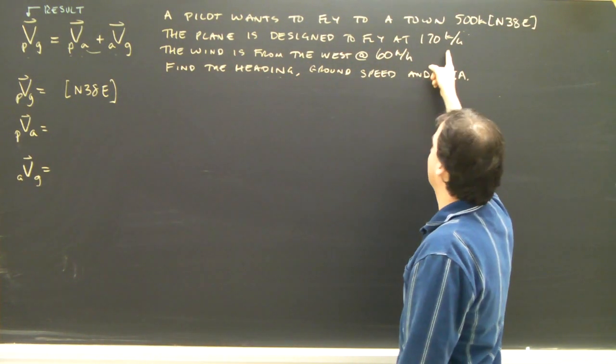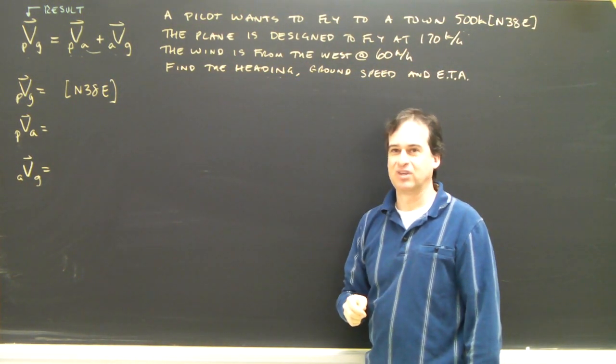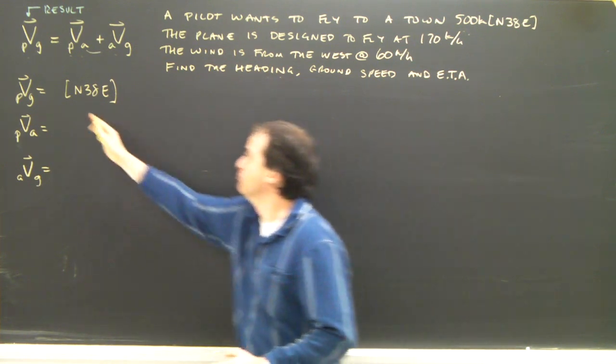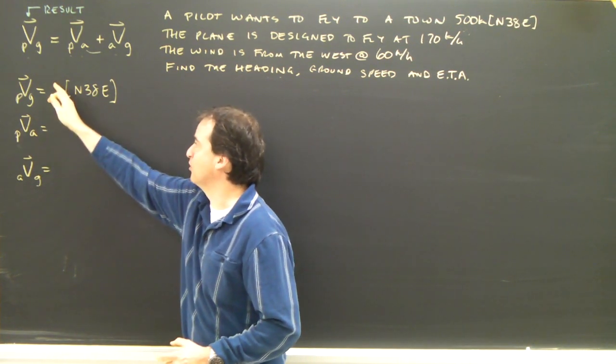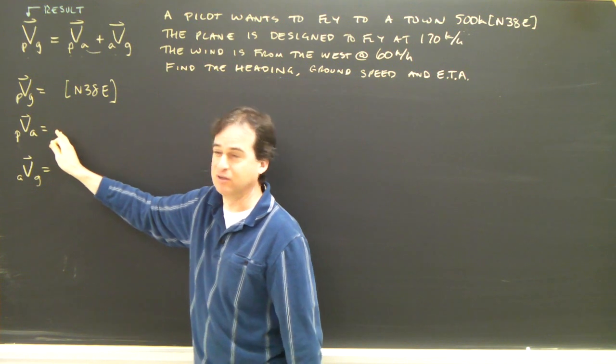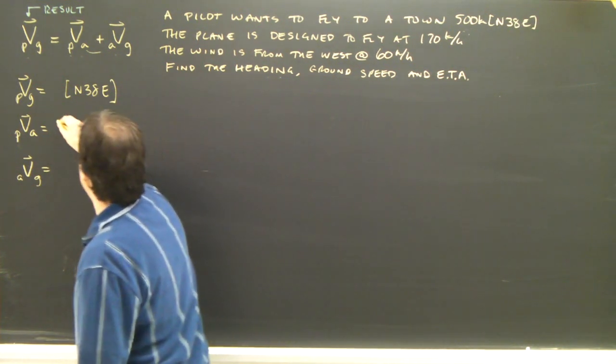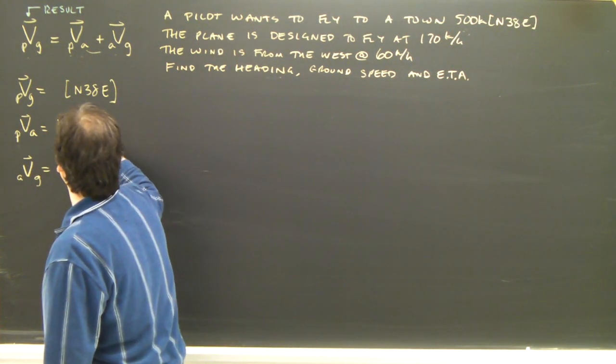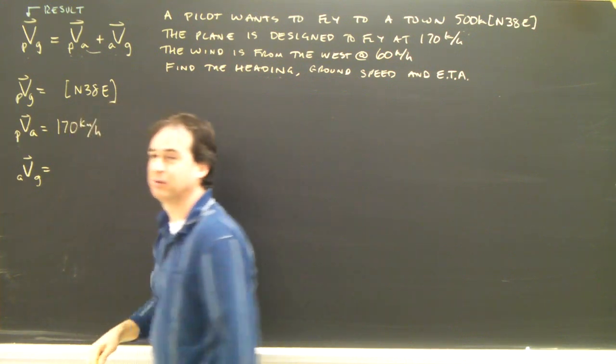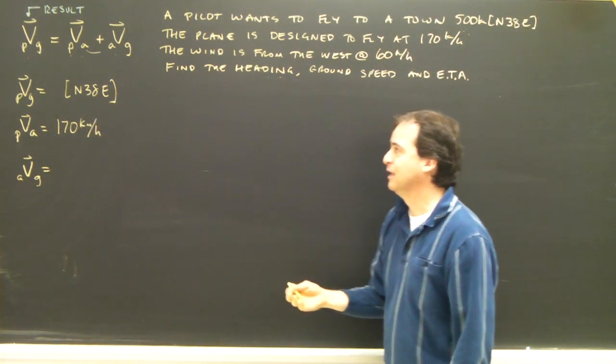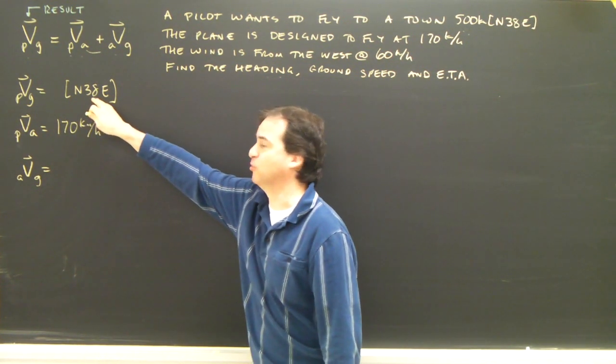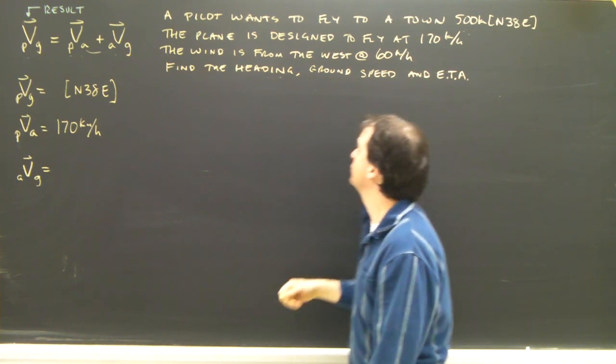The plane is designed to fly at 170 kilometers per hour. See, normally we would give you both of these, but in this case I'm not going to give you this, but I'm going to give you a number here. The plane flies at 170 kilometers per hour, but I don't know what direction it's flying in. I know that in the end it's going to end up going this way. So let's look.